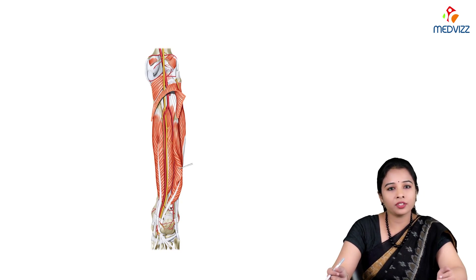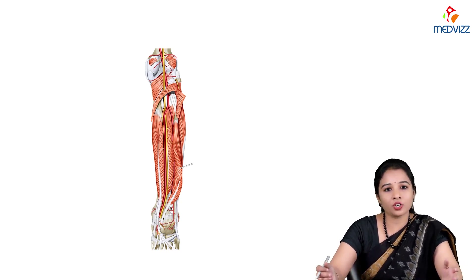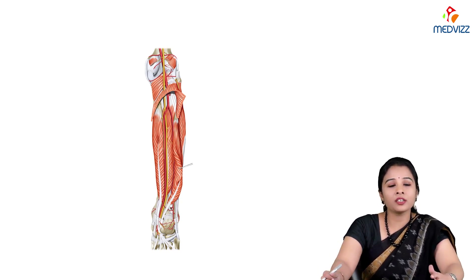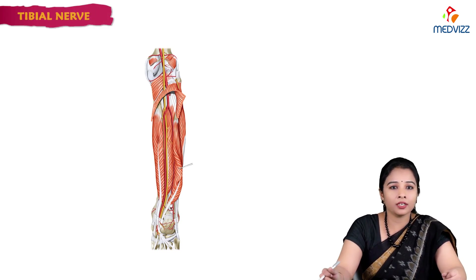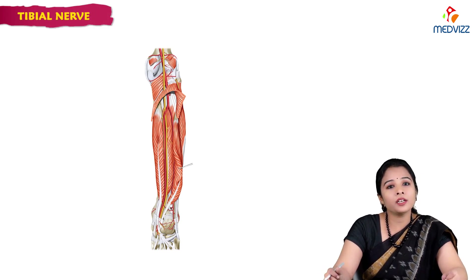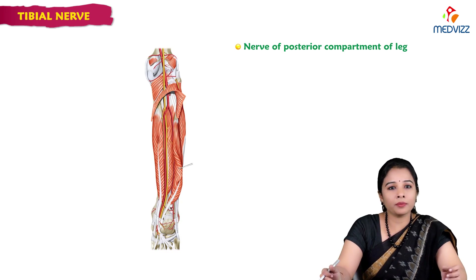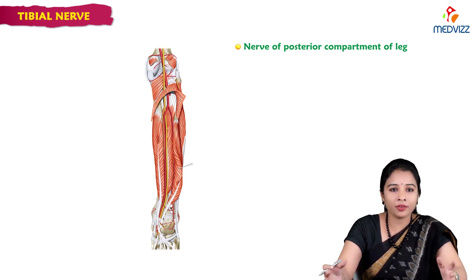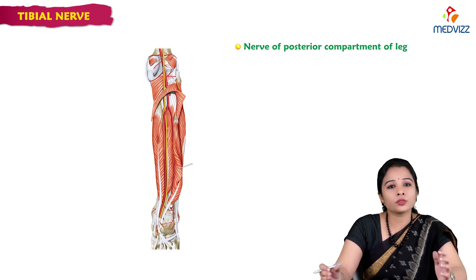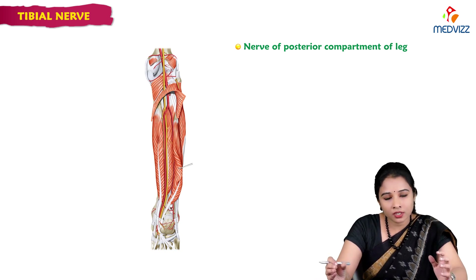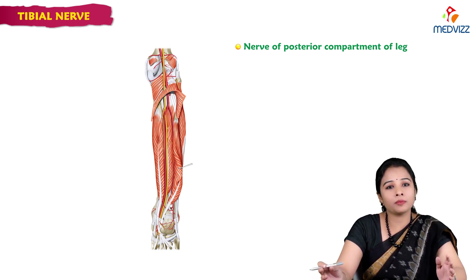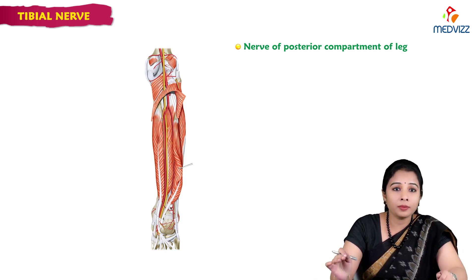Students, now we are going ahead with the next topic after sciatic nerve and common peroneal. The next one is the tibial nerve. Tibial nerve is the nerve of the posterior compartment of the leg, where the calf muscles are located. The nerve of that posterior compartment is the tibial nerve.